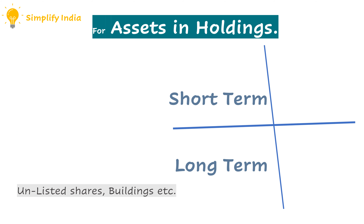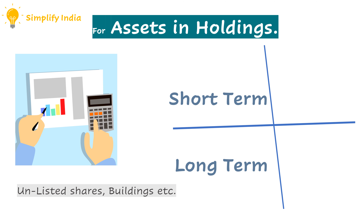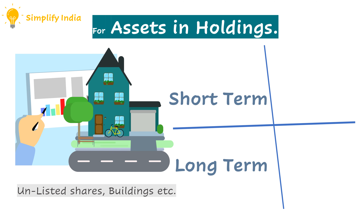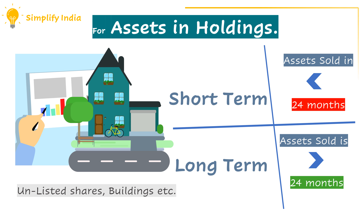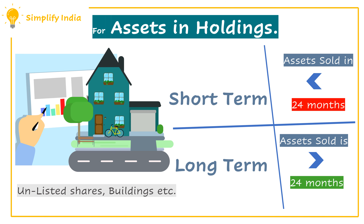In case of assets in holding like unlisted shares and buildings, if the asset has been sold within the period of 24 months from the date of acquisition, it can be termed as a short term capital asset. Whereas if the asset has been sold after the period of 24 months, it can be termed as a long term capital asset.